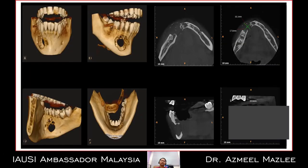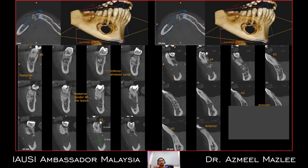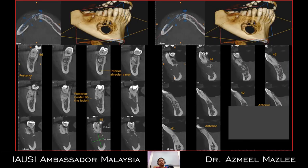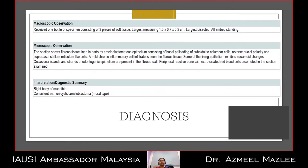The CT scan revealed a penetrating defect on the right body of the mandible, with loss of the buccal cortex and evidence of tunneling via cancellous bone towards the 4.6 region. There was a very thin safe margin of the lower body of the mandible, roughly 5 to 6 mm, with extensive destruction in AP and buccolingual directions. Incisional biopsy was taken and the result came back consistent with unicystic ameloblastoma, mural type.